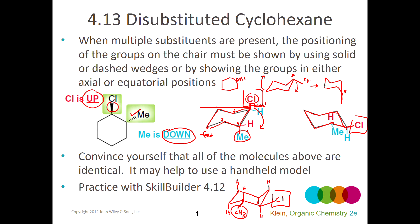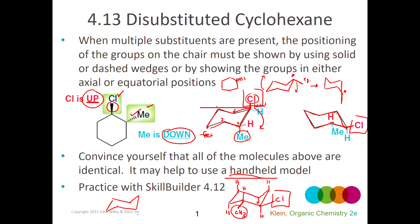Get used to working with the handheld model kit — you'll be able to use it during exams. It's extremely useful to make a model so you can rotate it around, because the model helps you see the chair in three dimensions and verify that the chair you're drawing actually looks like the model. What we notice is that because one group had a solid wedge and the other had a dashed wedge, there's no way to draw a structure where one group is axial and the other is equatorial.